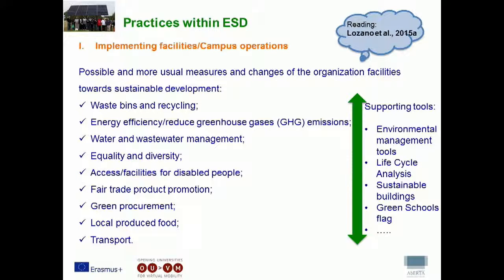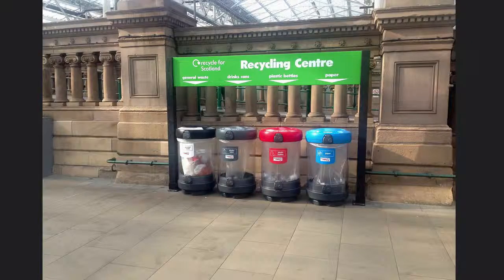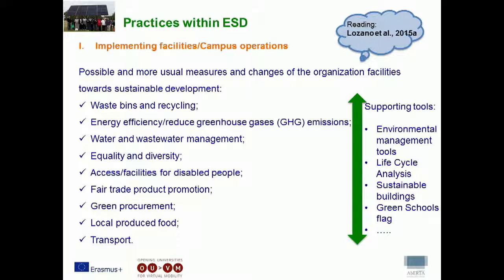Talking now about practices related to implementation in the facilities and campus operations — the most common things heard in this type of practice are related to reducing the environmental impact in the facilities of the organization. For example, simply adding waste bins for recycling practices, or water and waste management, or energy efficiency measures. This is more related to the environmental component of sustainability.